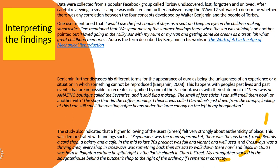The study also indicated that a higher proportion of users felt very strongly about authenticity of place, demonstrated by findings such as: 'Key Markets was a main supermarket, there was the gas board, Radio Rentals, a card shop, a bakery and a café — in the mid to late 70s the precinct was full and vibrant and well used.' And: 'Crossways in Paignton was a thriving area — every shop in Crossways was something back then, and it's sad to walk down there now, it's just an abandoned alleyway.' And: 'In 1950 I was born in Paignton Cottage Hospital right by the parish church.' These are all examples of authenticity of place.